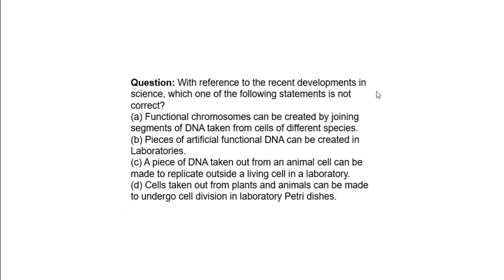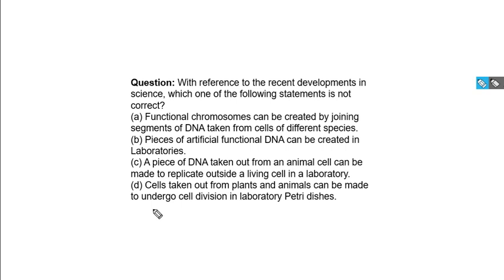With reference to the recent developments in science, which of the following statements is not correct? Statement A: Functional chromosomes can be created by joining segments of DNA taken from cells of different species. Statement B: Pieces of artificial functional DNA can be created in laboratories. Statement C: A piece of DNA taken out from animal cells can be made to replicate outside a living cell in a laboratory. Statement D: Cells taken out from plants and animals can be made to replicate outside a living cell in Petri dishes.